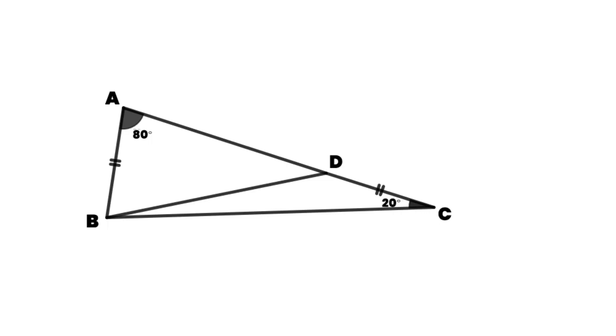In triangle ABC, angle A is equal to 80 degrees. Angle C is equal to 20 degrees. Point D is on segment AC. AB is equal to CD. What is the angle of angle BDA?